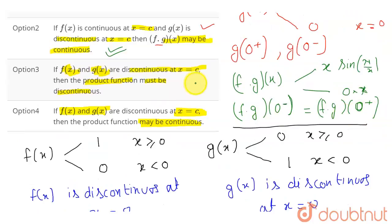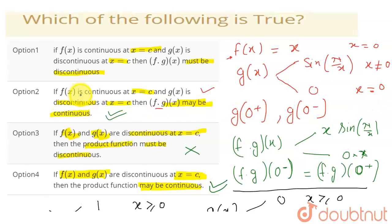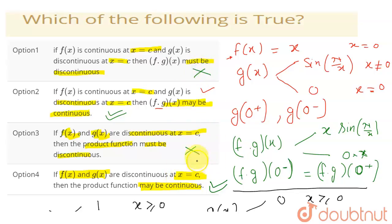So option 3 is incorrect, because I have proved that if two functions are discontinuous at some point, their product function can still be continuous at that point. Option 4 is correct — if two functions are discontinuous at x = c, their product function may be continuous or may be discontinuous. Similarly, from the earlier example, if one function is continuous and the other is discontinuous, their product may be continuous or may be discontinuous. So options 2 and 4 are correct, and options 1 and 3 are incorrect.